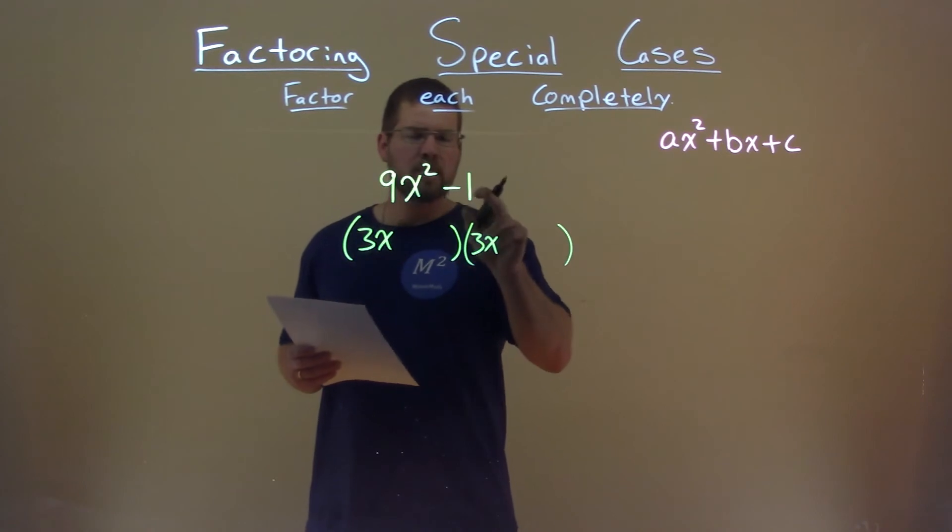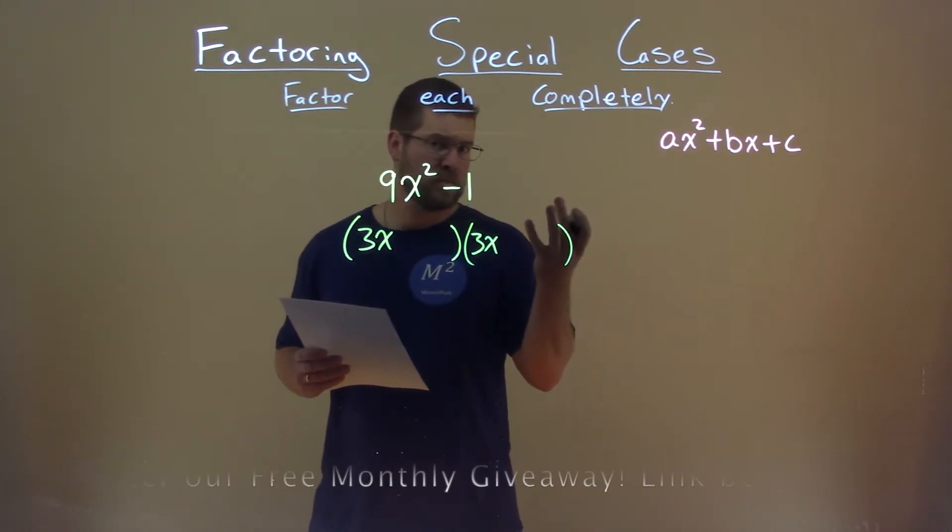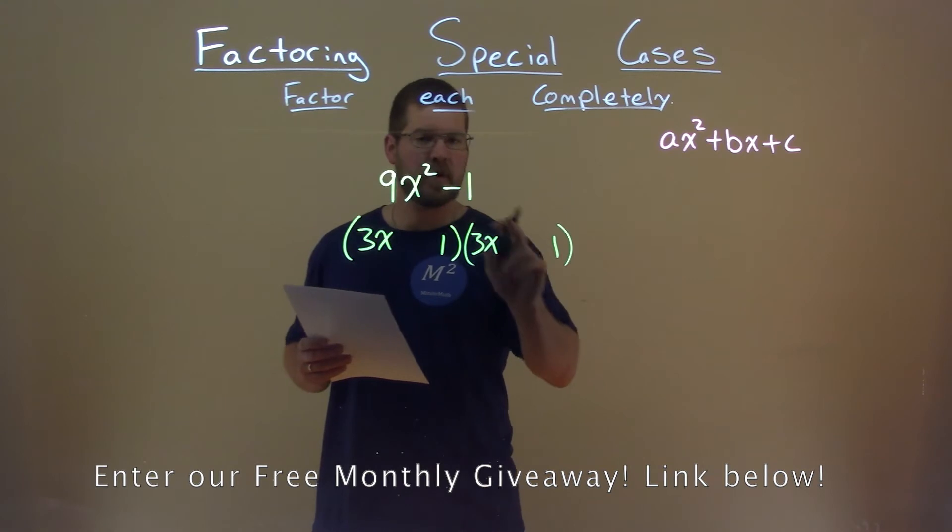Now let's look at the 1. Well, square root of 1 is 1, so 1 times 1, when these get multiplied, it gives us 1.